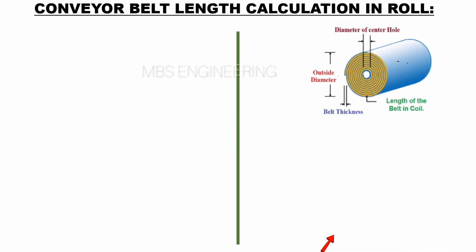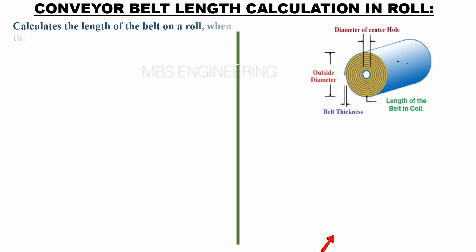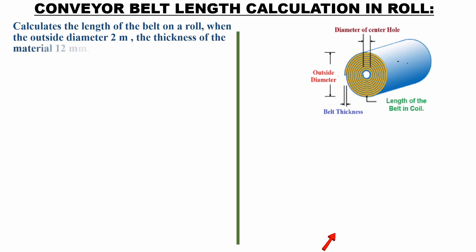We will learn the formula and sample calculation for conveyor belt length in the roll condition. Calculate the length of the belt on a roll when the outside diameter is 2 meters, the thickness of the material is 12 millimeters, and the diameter of the central hole is 0.3 meters.